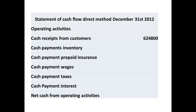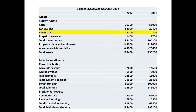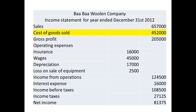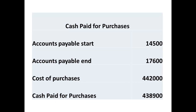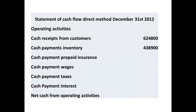To determine the cash paid for purchases, we need to go through a two-stage process. First, we consider the changes in inventory over the course of the year, and we need the figure for cost of goods sold. We take inventory at the start, add the cost of goods sold, then subtract the inventory figure at the end of the year — the result is the cost of purchases. Then we take the accounts payable figure at the start, add the cost of purchases, and subtract accounts payable at the end of the year, giving us a figure of $438,900 for cash payments for purchases.